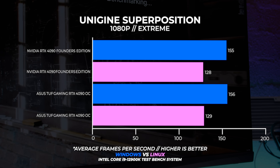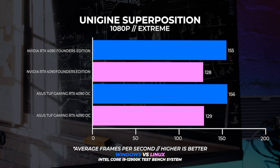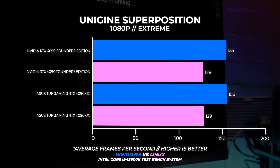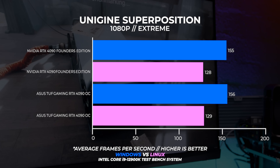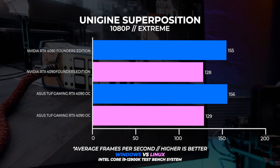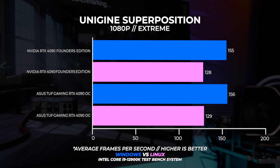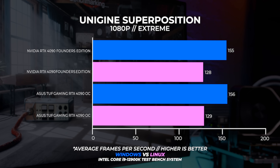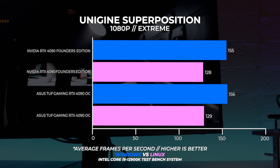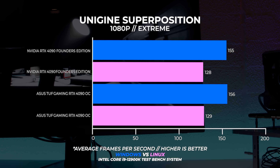First up with the 1080p Extreme benchmark — as usual this one is highly GPU-bound, and much like all of our older Windows versus Linux testing, the Windows version of this benchmark far outperforms the Linux version. In Linux the OpenGL version doesn't perform as well — that's just how it is with Linux, regardless of the kernel version or the driver being used, whether you're using an AMD GPU or an NVIDIA GPU. We're sure we'll see this with Intel GPUs later as well.